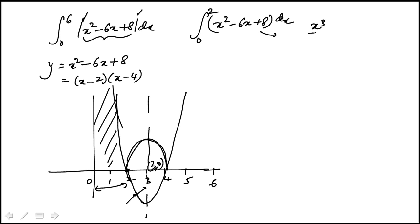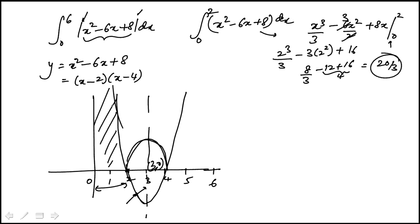This would be x cubed over three minus six x squared over two plus eight x. That becomes three and I got evaluated zero to two. At zero it's going to be zero. So we'll be left with two cubed over three plus sixteen. So this is eight over three, twelve, sixteen, that's four. This becomes twenty over three. So that's just this piece.